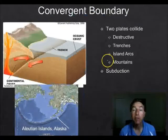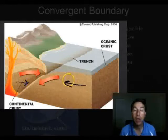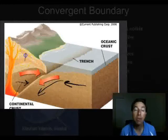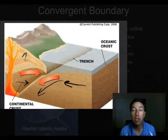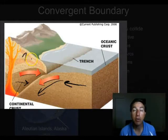The next boundary is a convergent boundary, where two plates crash into each other. Depending on the types of crust involved, one plate might dive underneath another. If we have continental crust with mountains on top, we get more mountains built up. This is what's happening where India is crashing into Asia, forming the Himalaya Mountains — the tallest mountains in the world. When two continental crusts collide at a convergent boundary, you get uplift or mountain building.